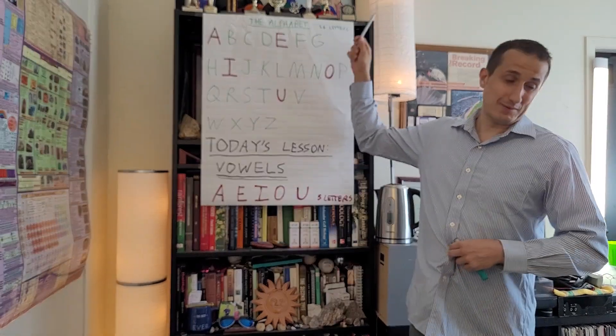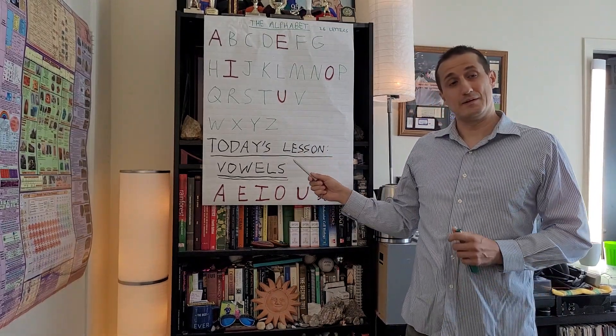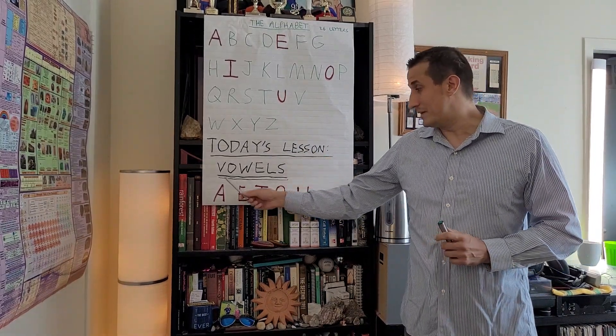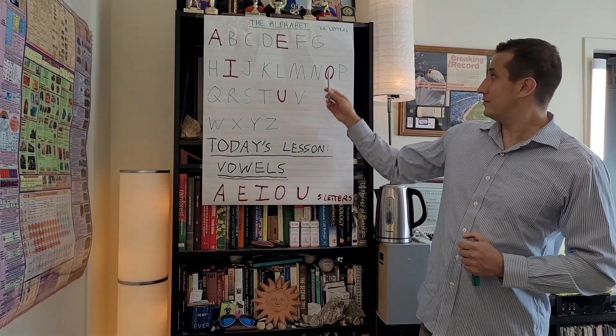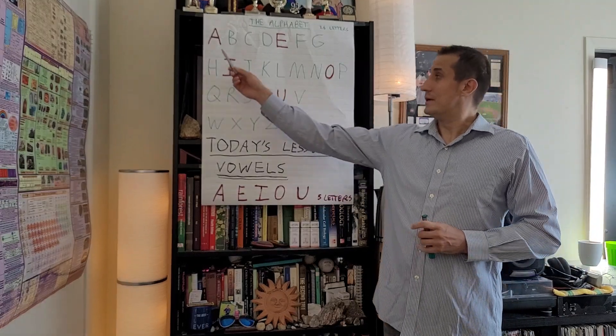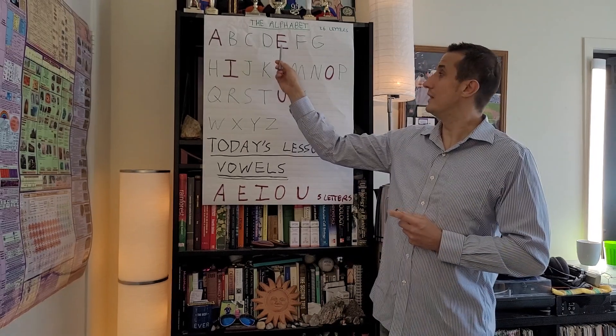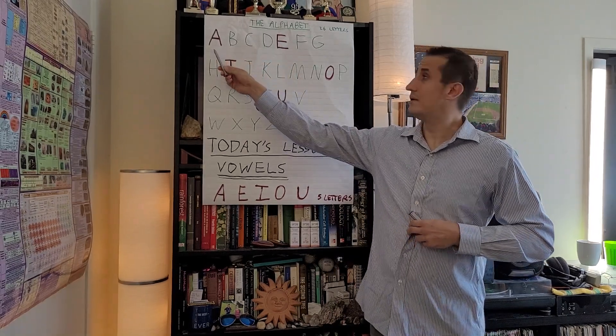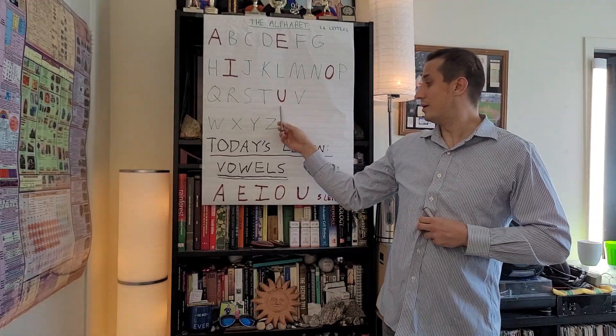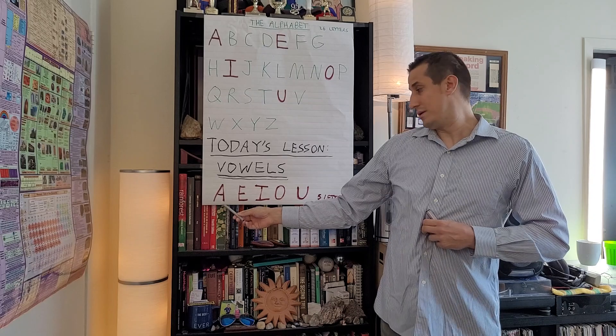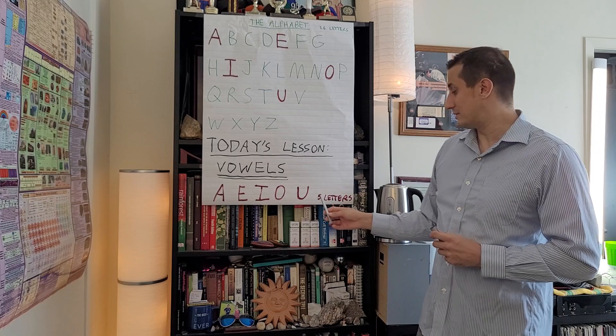So we know there's 26 letters in the alphabet, but what we're going to learn today—today's lesson is going to be vowels. Yes, vowels. So we know there's 26 letters, and what we can see is that there seems to be different unique letters: A, E, I, O, and U. These are special letters called vowels. There's five vowels in the alphabet.